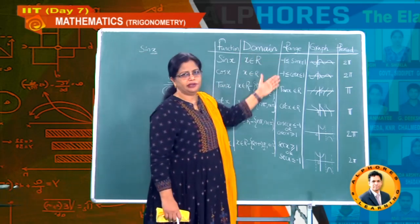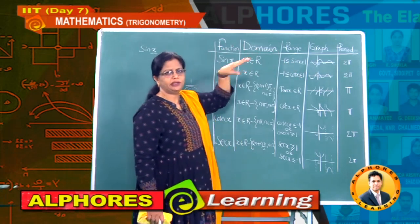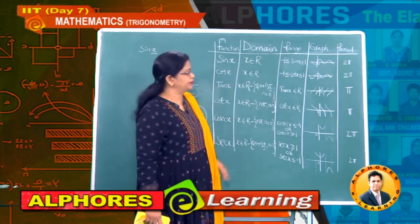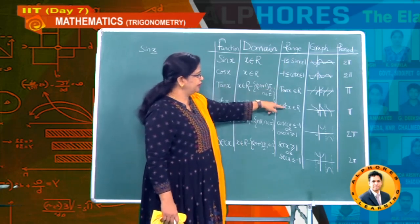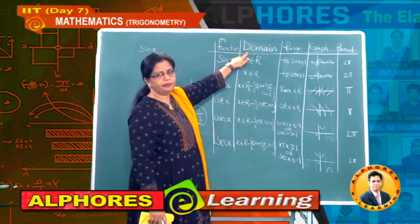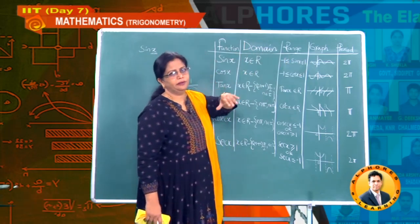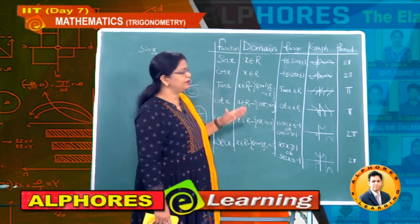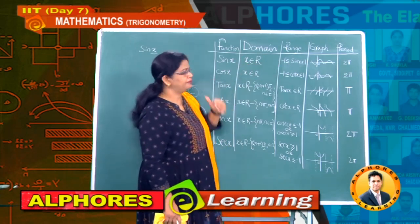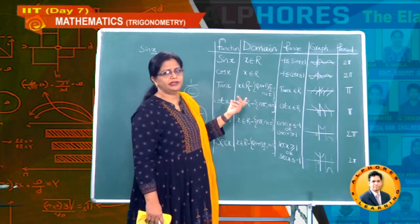Now let us consider range. Whatever x value — largest or smallest — you substitute, for sine you will always get a value between minus 1 and plus 1. Similarly for cosine. For tan, the range is all real numbers. Range means: if you substitute values from the domain set, the set of all resulting answers — all images of the function — is the range. Whatever x you substitute from the domain, the answers you get all come under the range.